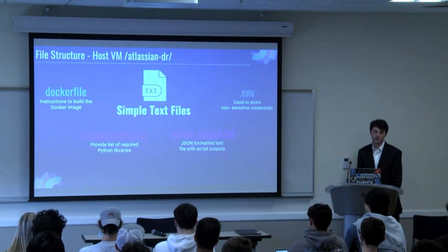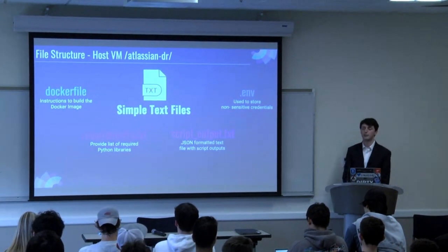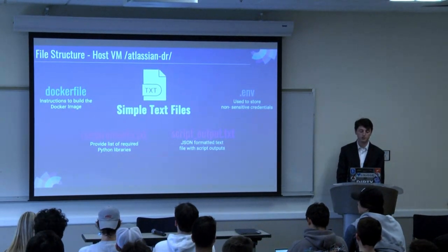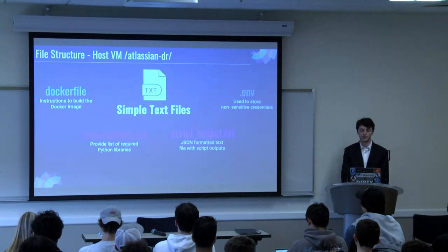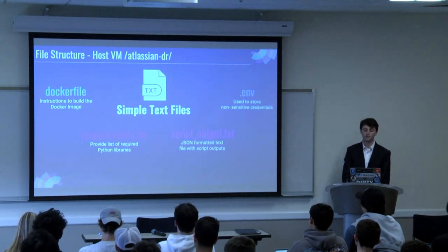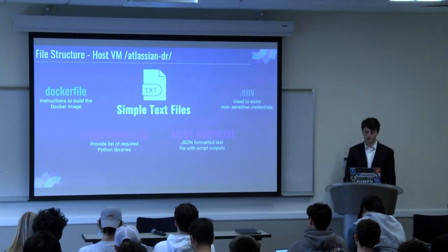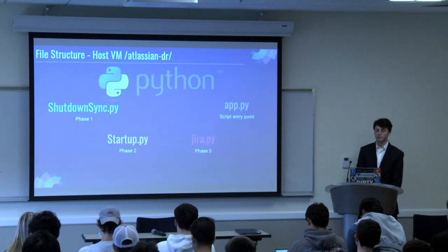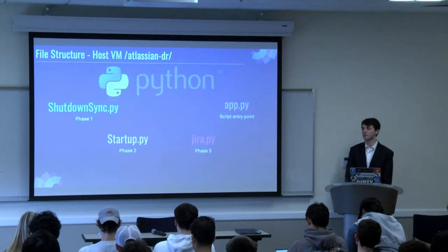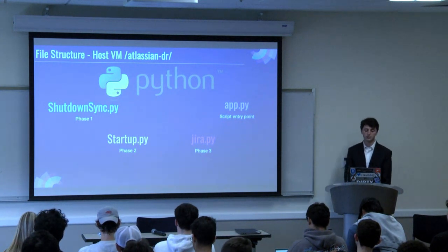Within the project there are five text files. There's a Docker file that creates the Docker image, a requirements.txt file that lists all the Python requirements, a script output file which logs all the activities the script makes throughout the process, and a .env file which stores non-sensitive credentials such as usernames and web addresses. I also made four Python files with app.py being my main entry point, which facilitates the running of the three other files. Those three files coincide with the different phases of my sync process.